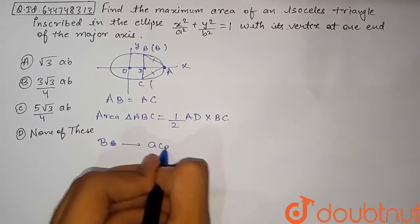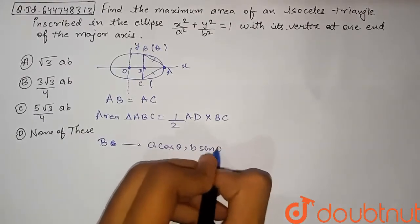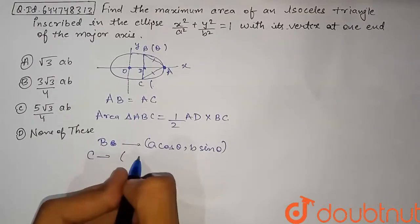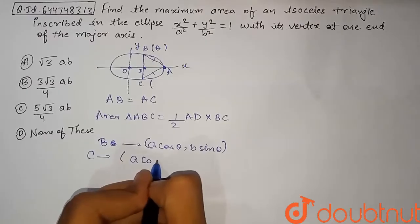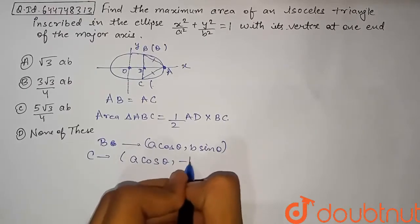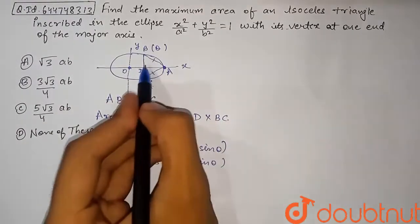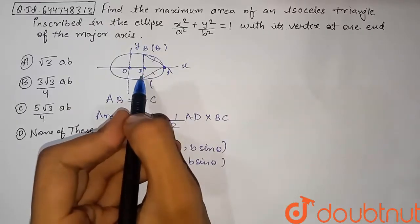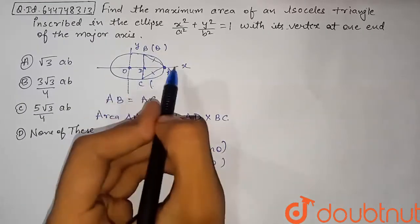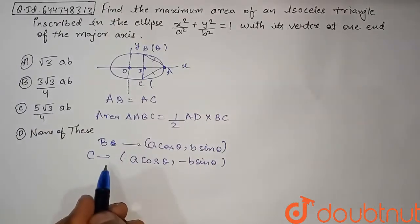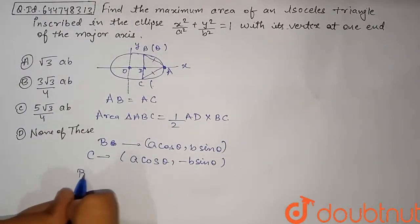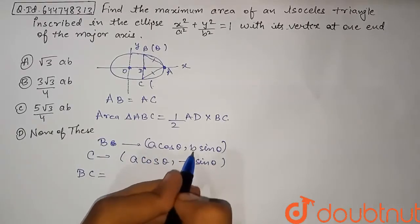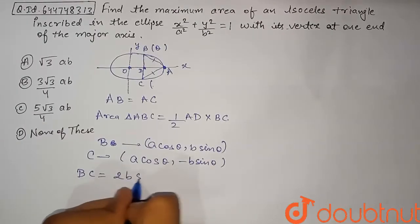Point B has coordinates (a cosθ, b sinθ). Since B and C are mirror images of each other about the x-axis, point C has coordinates (a cosθ, −b sinθ). Therefore, BC equals the difference of the y-coordinates, which is 2b sinθ.